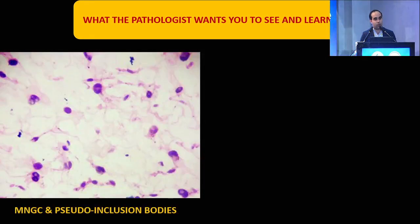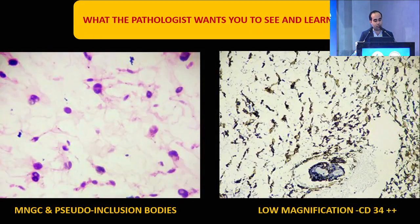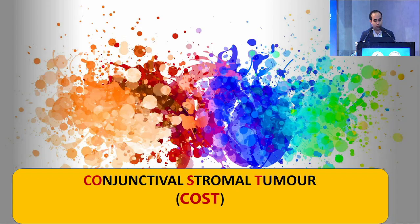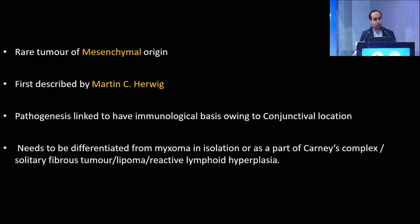We performed an immunohistochemistry panel on the advice of the pathologist. Multi-nucleated giant cells and pseudo-inclusion bodies showing positivity with cluster differentiation 34 (CD34) on IHC were found. This is the post-operative picture four weeks later. The diagnosis we conclude is conjunctival stromal tumor. But is this the end of the road? Not really.